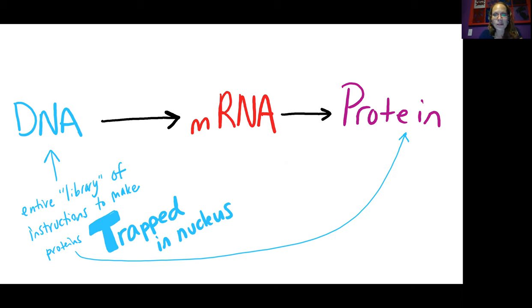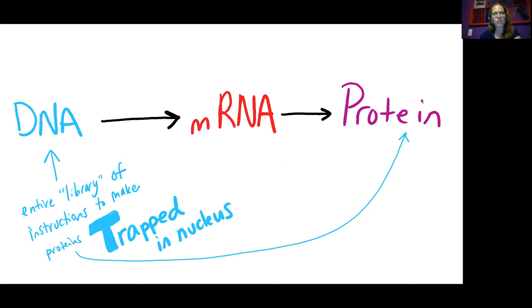The M here stands for messenger. And so the messenger RNA is the molecule that will take that information from the big library in the nucleus to the ribosome for making those proteins.